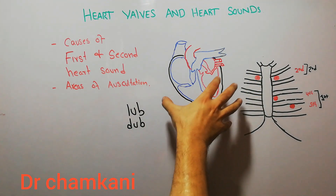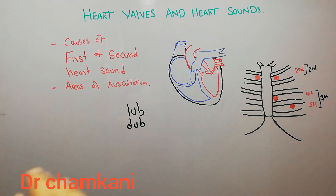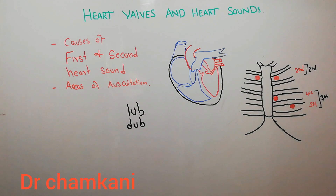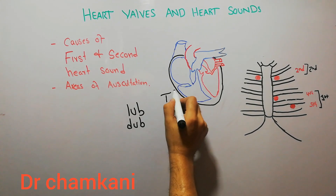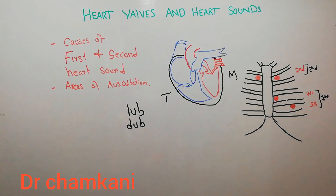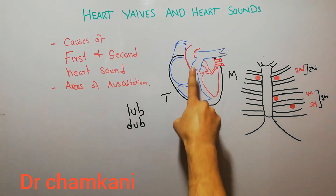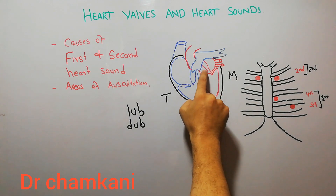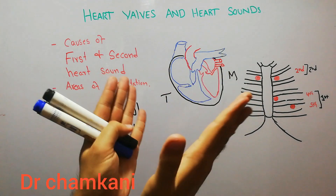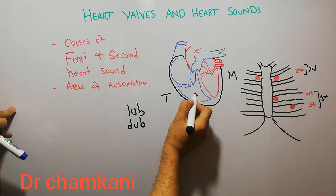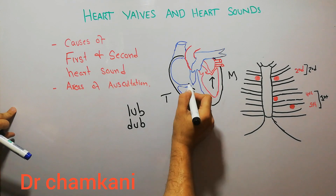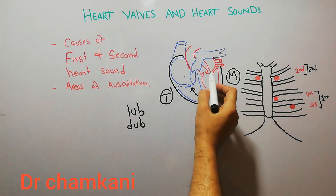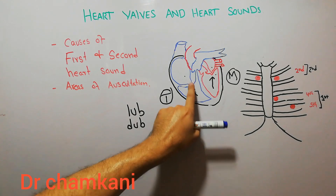As soon as the ventricles contract simultaneously in a normal heart, the atrioventricular valves — the tricuspid valve and the mitral valve — they close. This happens because when blood is going into the pulmonary arteries from the right ventricle and into the aorta from the left ventricle, back pressure causes the tricuspid valve between the right atrium and right ventricle, and the mitral valve between the left atrium and left ventricle, to close.